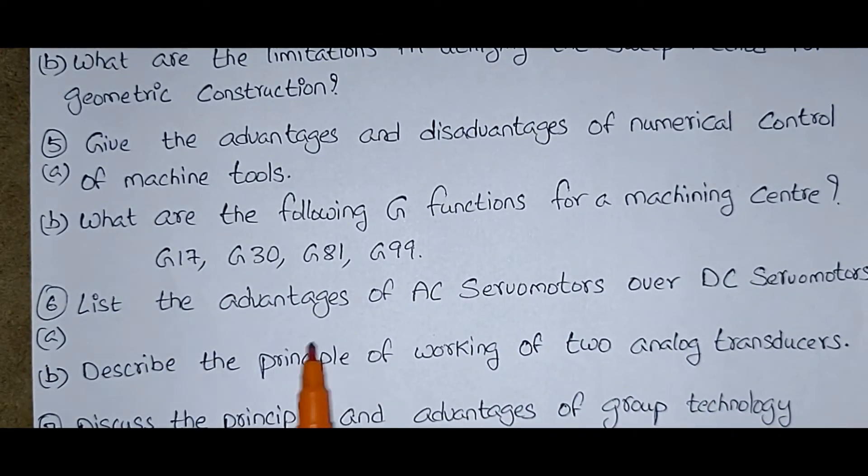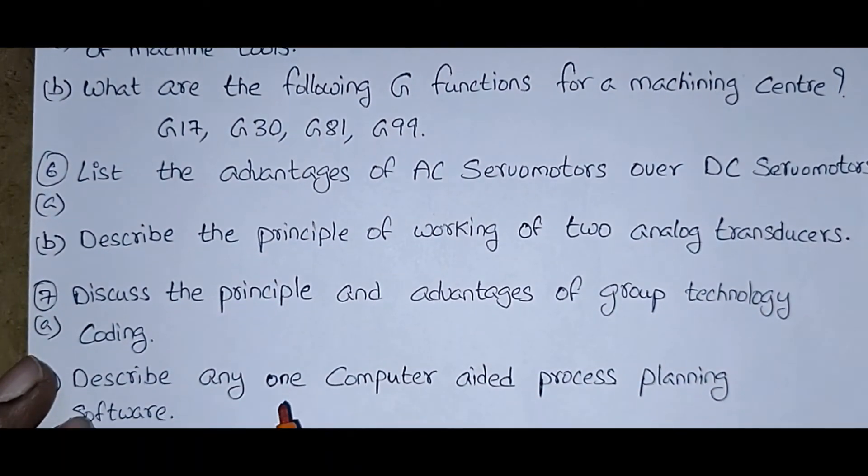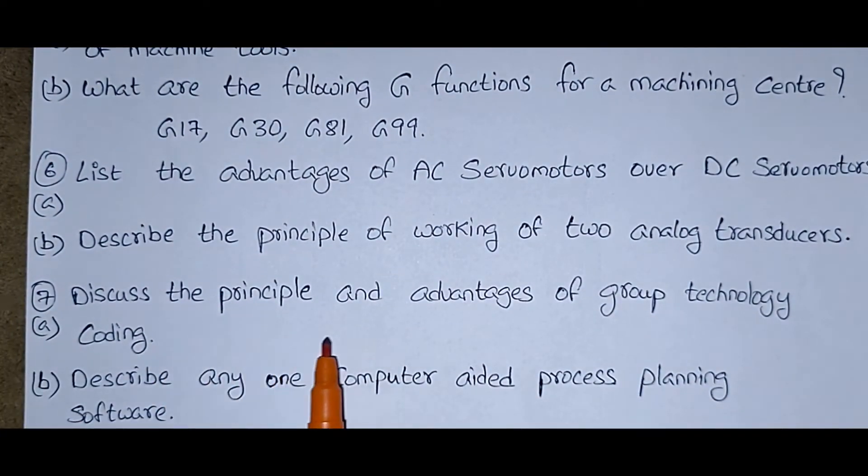List the advantages of AC servo motors over DC servo motors. Describe the principle of working of two analog transducers. And seventh one: discuss the principle and advantages of group technology coding and describe any one computer-aided process planning software.